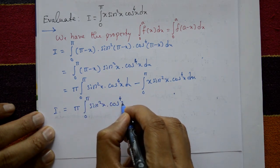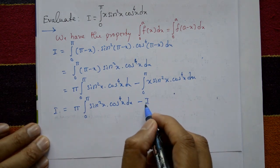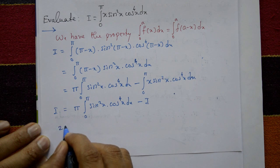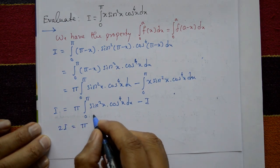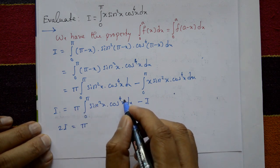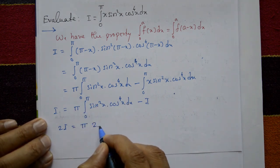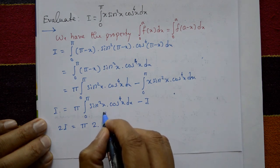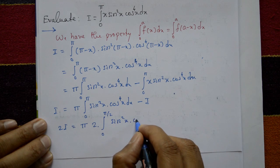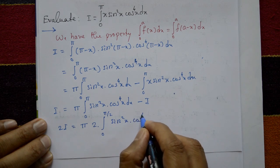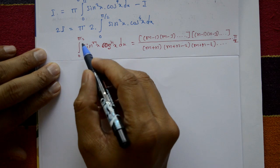Shifting I to the left-hand side gives 2I = π·∫₀^π sin²x·cos⁴x dx. Using the even-function reduction limit property, ∫₀^π equals 2·∫₀^(π/2), so 2I = π·2·∫₀^(π/2) sin²x·cos⁴x dx.